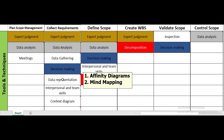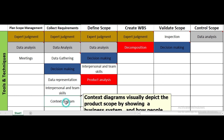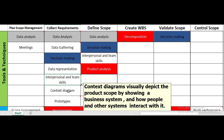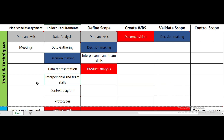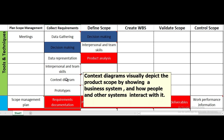For data representation in collect requirements, we can use affinity diagrams and mind mapping. Interpersonal and team skills include nominal group techniques, observation, conversations, and facilitation. Another tool is the context diagram, which is a visual depiction showing how different components of a business system and product scope interact with each other. Prototypes are also used to obtain early feedback related to scope.